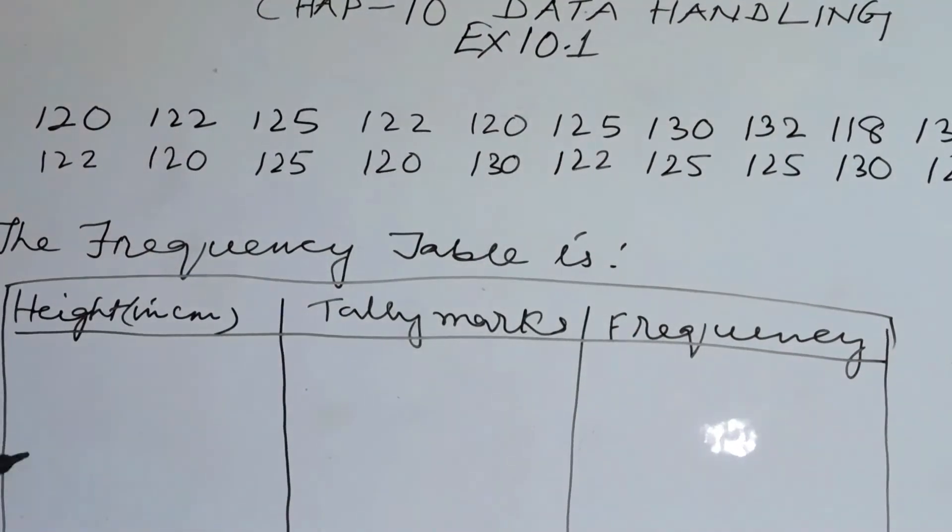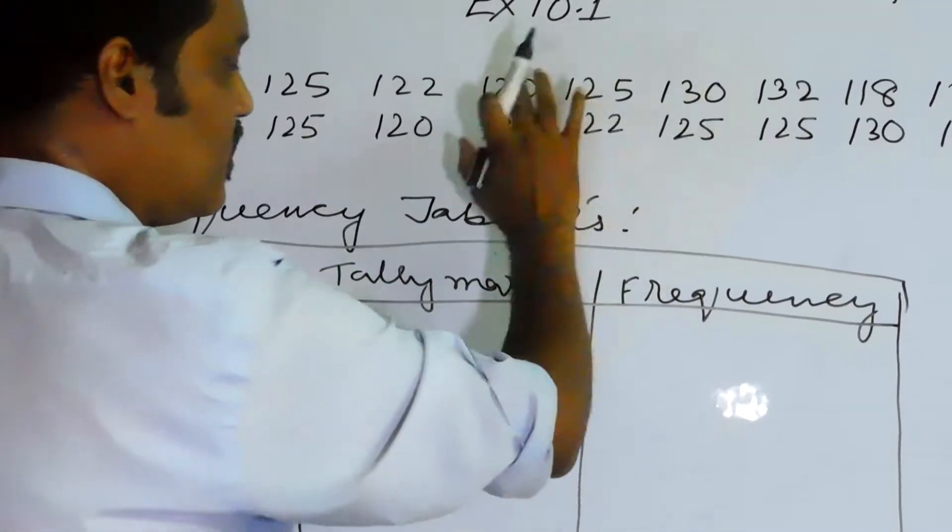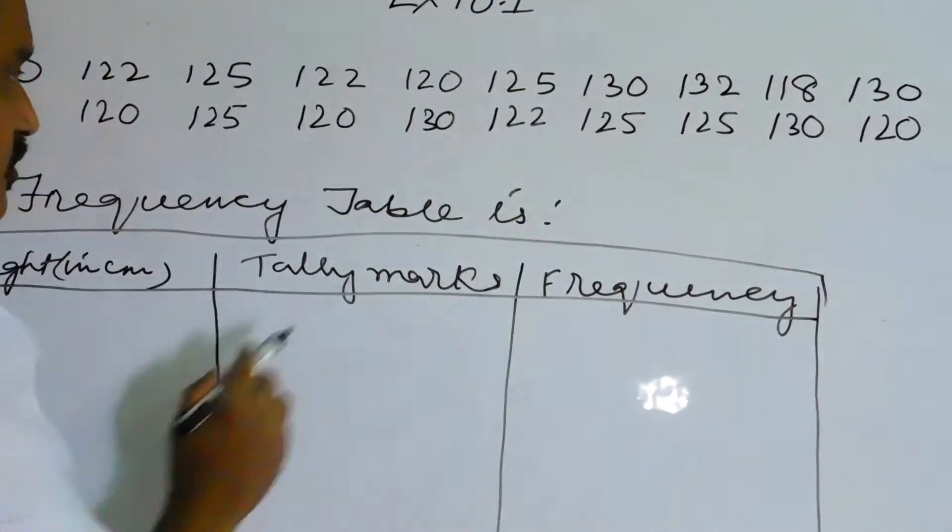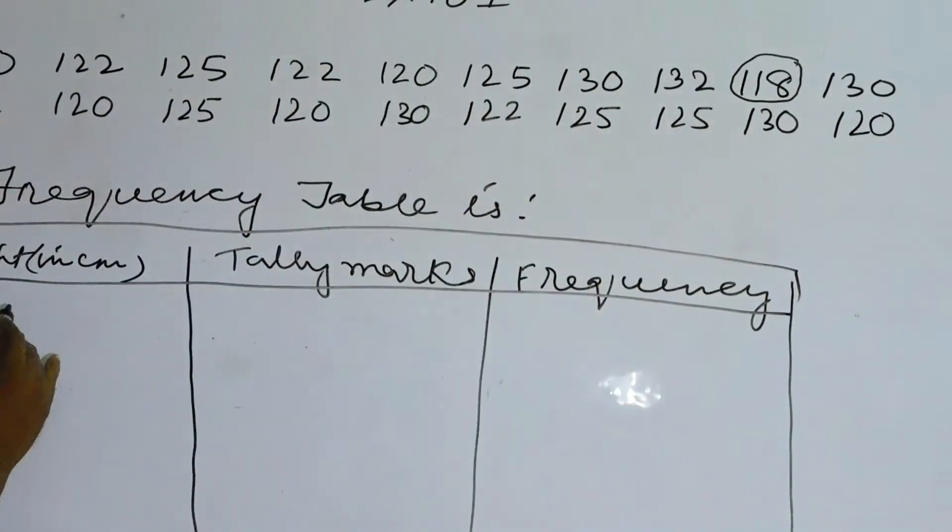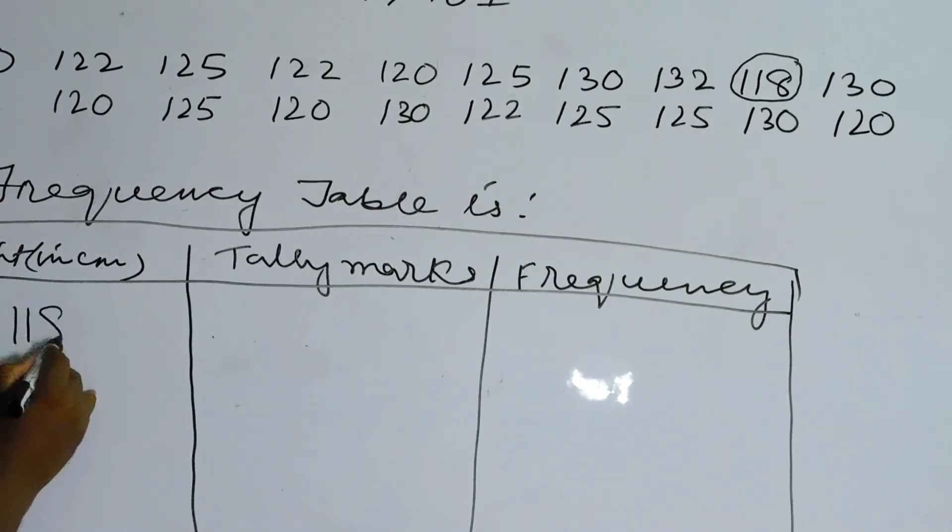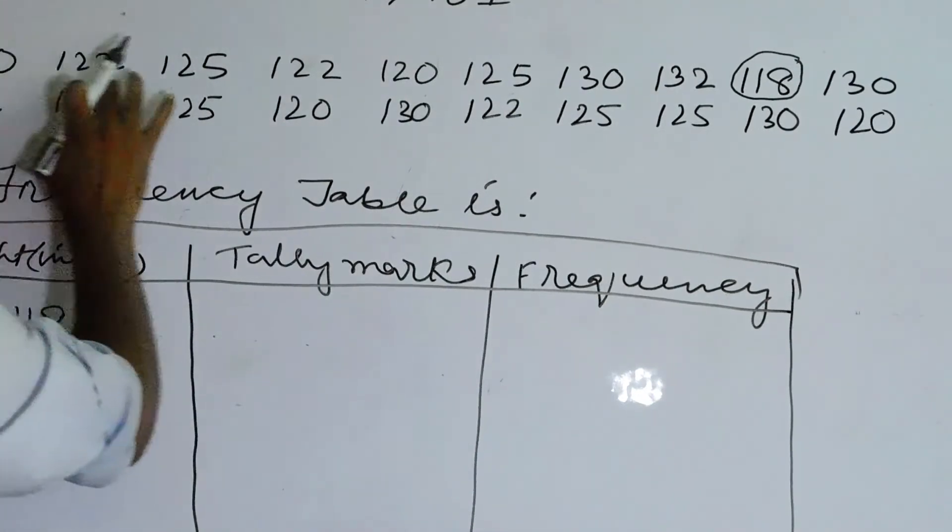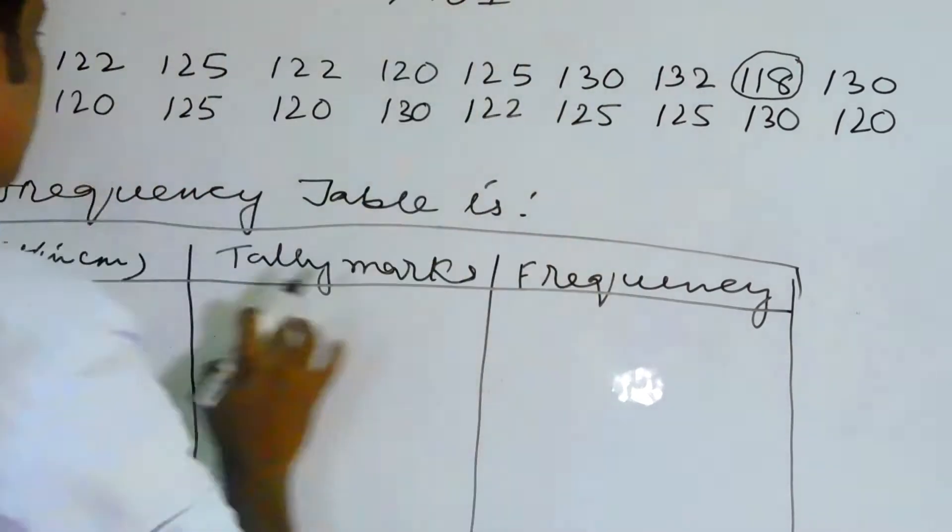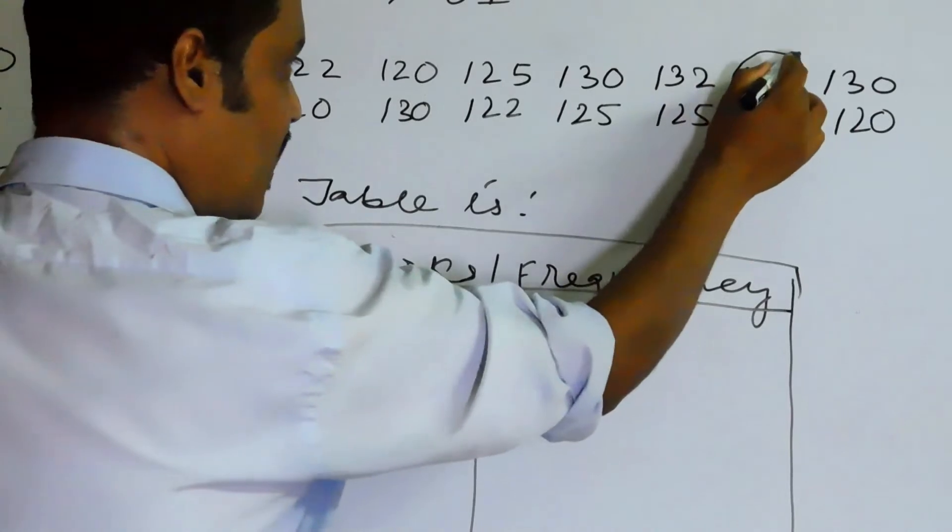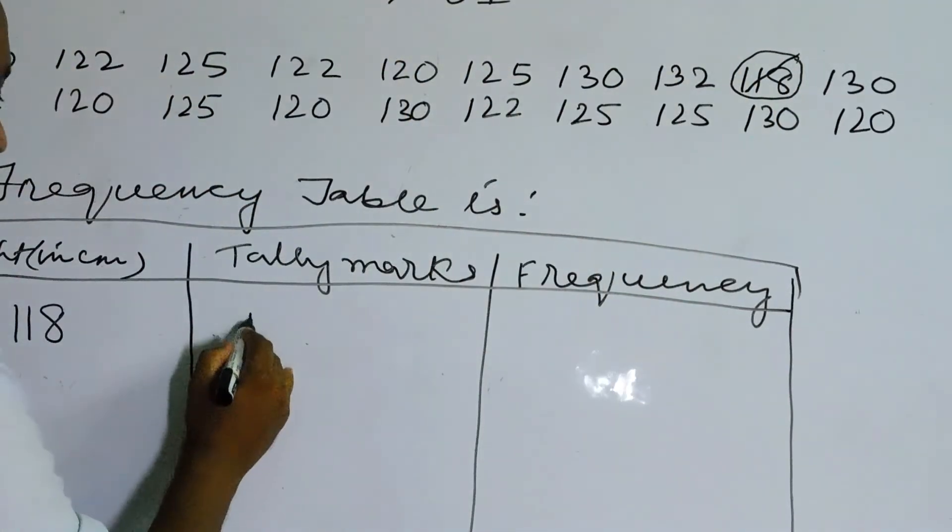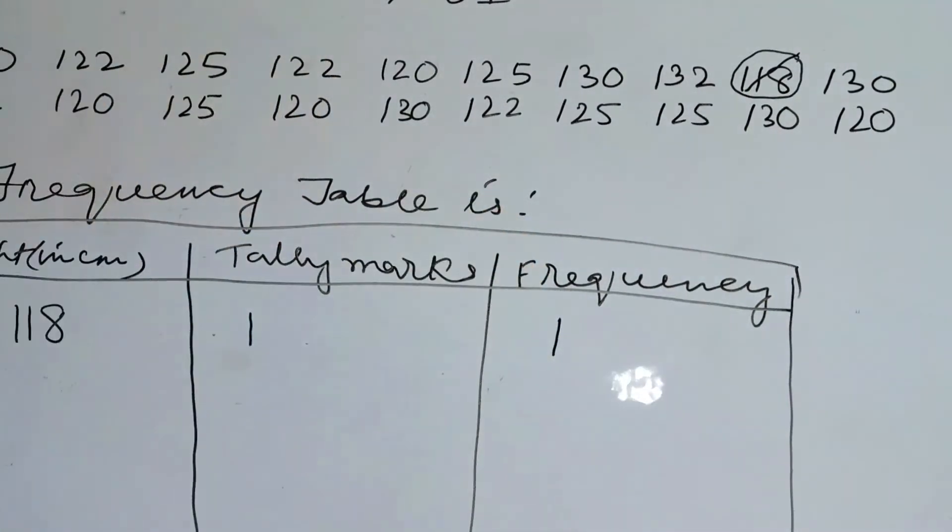Now before you start first you have to find out the smallest number or the shortest height. So children I can see 118 is the shortest height, so you write 118 here. Now find out how many 118 are there. In the first line I see only one here, in the second line no 118, so you can just strike it 118 and write one here, so here it will be in the frequency one.